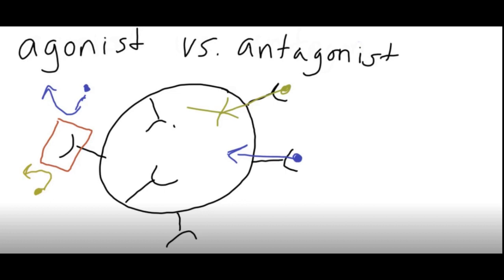You don't want to think about antagonist in the sense of good or bad, just that it prevents something from happening. It's going to prevent that normal function from binding to that receptor on the cell.